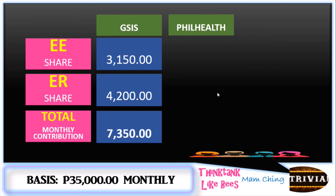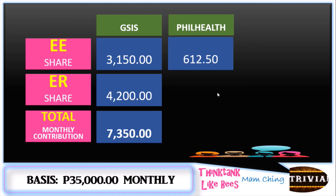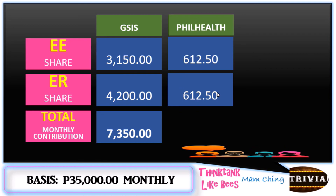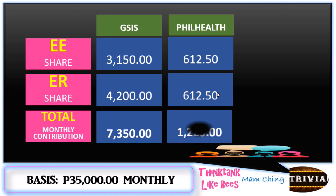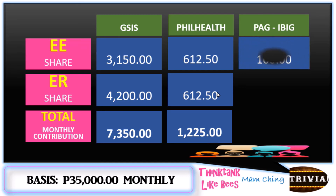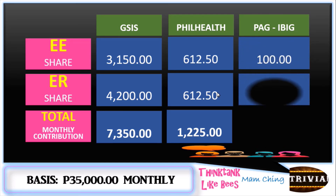For the PhilHealth contribution, you multiply ₱35,000 by 1.75 percent. You get ₱612.50 and another ₱612.50 for the employer, so the total is ₱1,225 pesos. For the ECC, you share ₱100 pesos both for employee and employer.